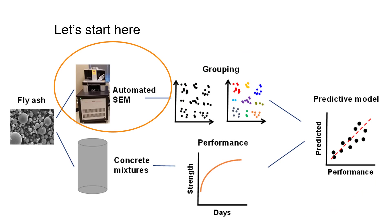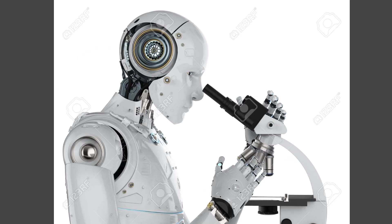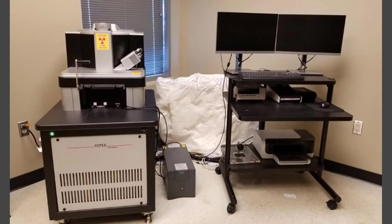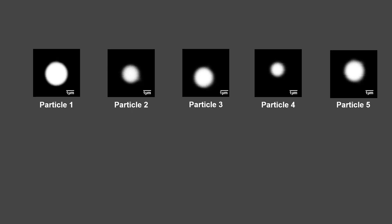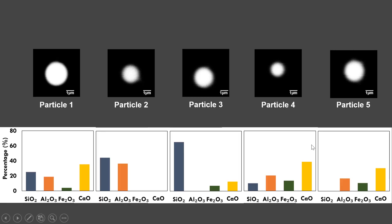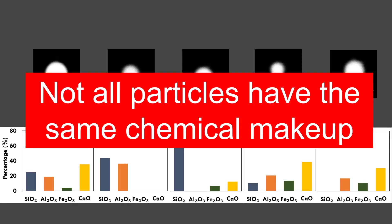Let's start at the beginning with this automated SEM. It is a scanning electron microscope that can look at individual fly ash particles. It takes a few seconds to find a particle, measure the size and shape of the particle, make sure that it is a fly ash particle, and then it also measures the chemistry. Not all particles have the same chemical makeup, but what do you do with that?